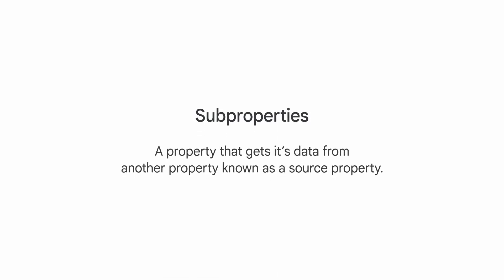You can filter events from the source property so that only a subset appears in the sub property. Sub properties then can give you greater control over user access to your data, because you can grant someone access to only a sub property instead of an entire source property's unfiltered data.